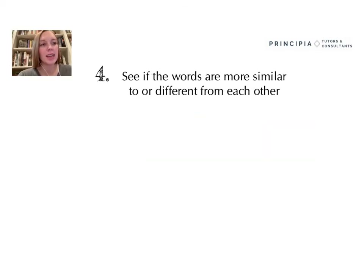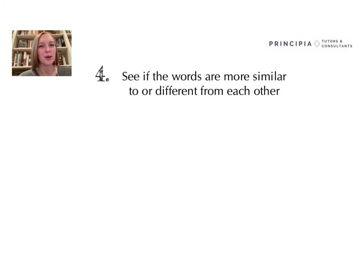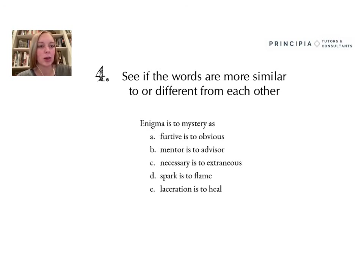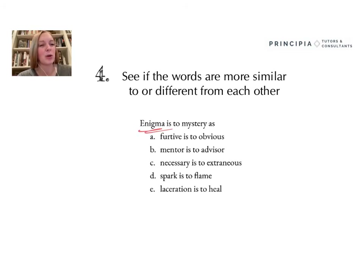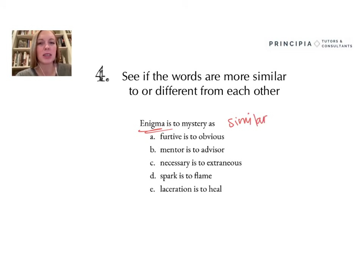Our fourth and final strategy is to see if the words are more similar to or different from each other in both the analogy question and the answer choices. This strategy works best with words that you kind of know but maybe aren't 100% sure of the definition. Let's take a look at this in a practice question. Our question says enigma is to mystery. Maybe I've heard the word enigma before, but I don't really exactly know what it means — I do know that it's sort of similar to mystery because I've heard them in similar contexts. Now I'm going to go through my answer choices and see if the words seem similar to each other or different from each other.